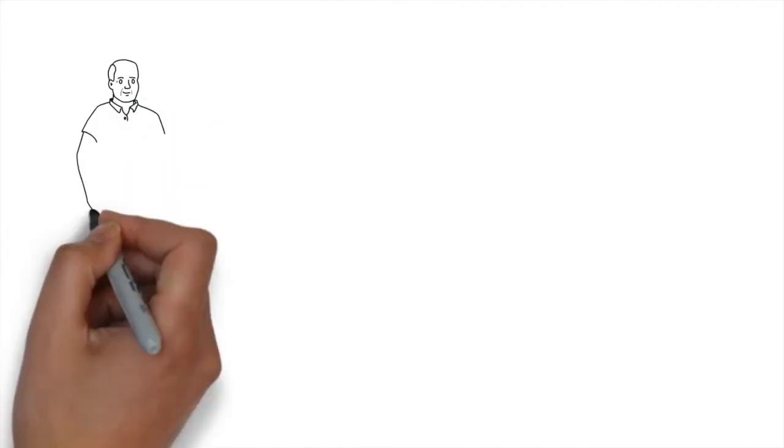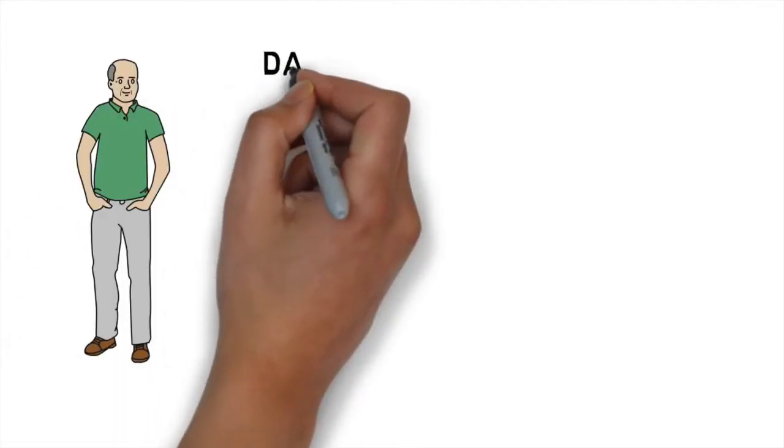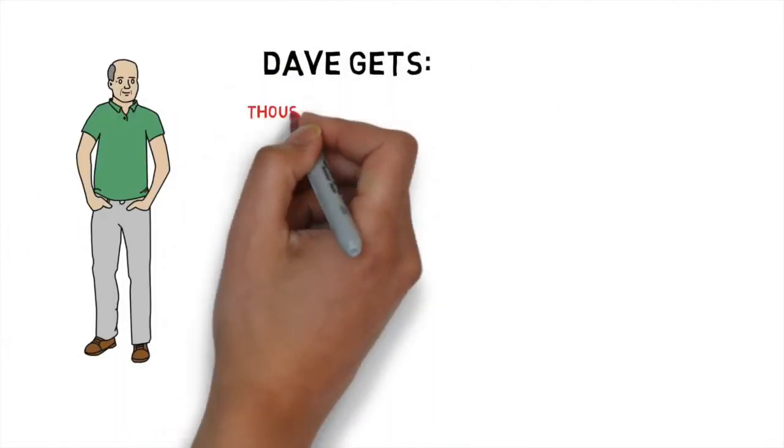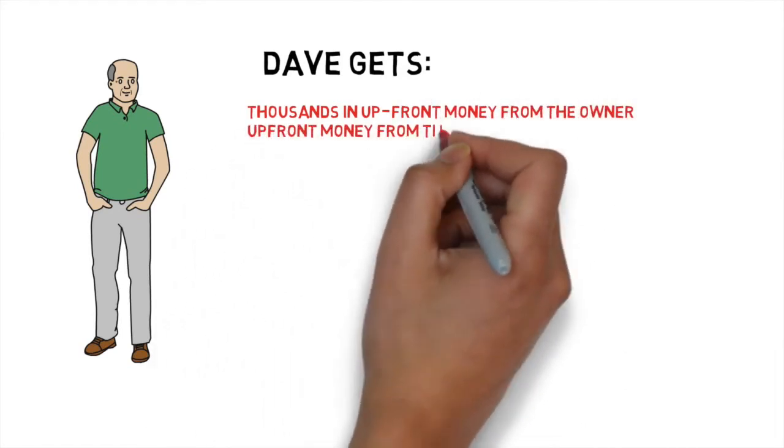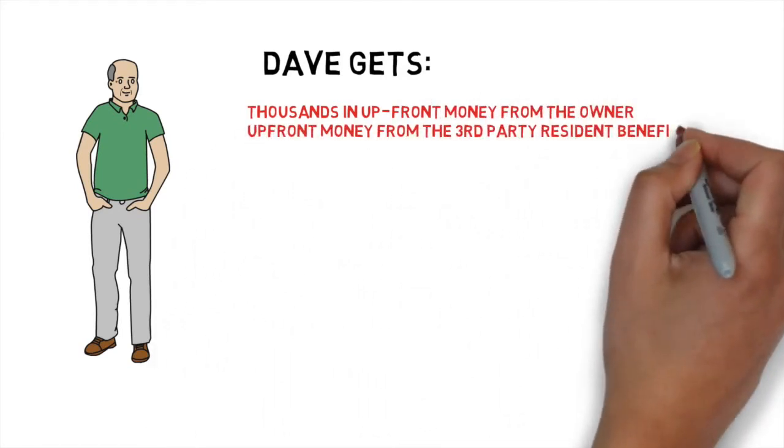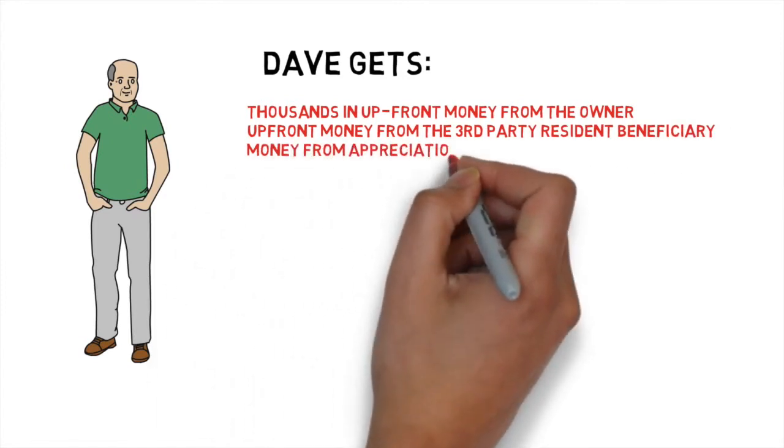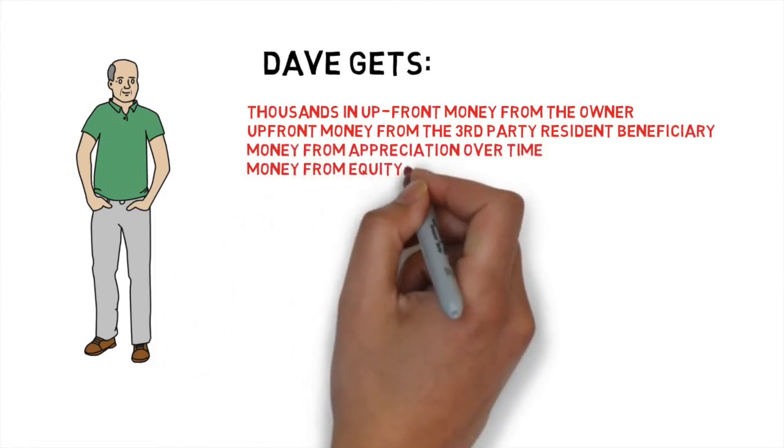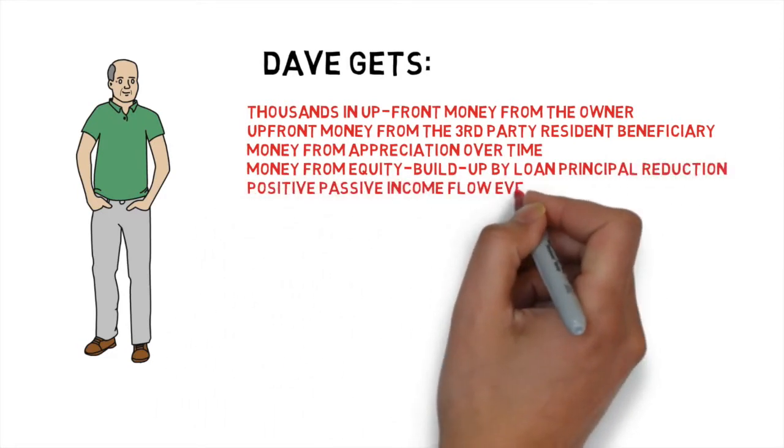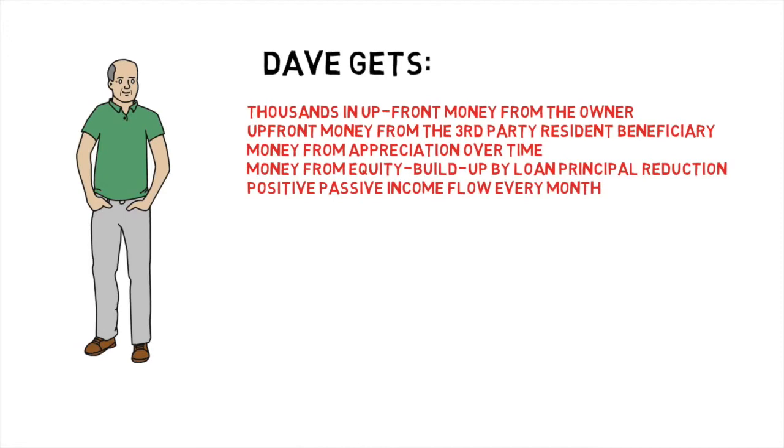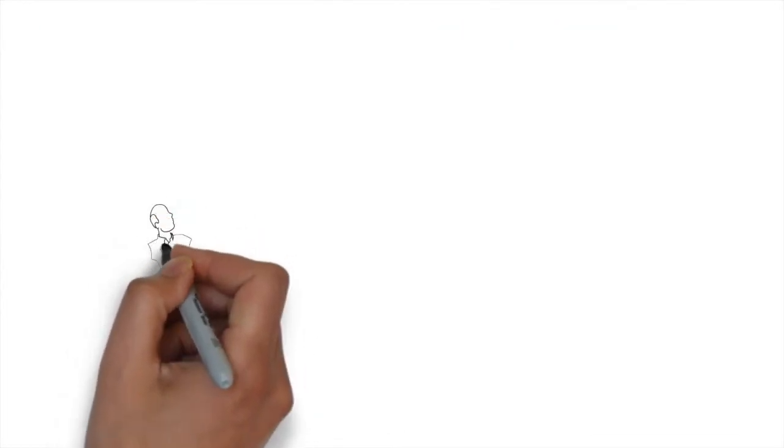Through the ODWM system, while using none of his own cash or credit, our friend Dave is able to make thousands of dollars in up-front money from the owner of record, up-front money from the third-party resident beneficiary, money from appreciation over time, and money from equity buildup by loan principal reduction, and most often with a positive passive income flow every month.